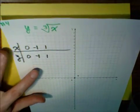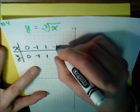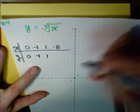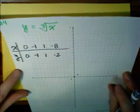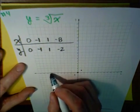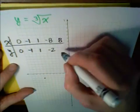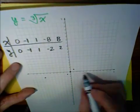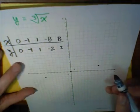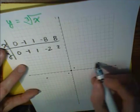But let's pick a number that has a cube root. Say negative 8. The cube root of negative 8 is negative 2. So we're going to go to negative 8, negative 2. Likewise, the cube root of 8 is 2. So 8, 2, and I hope you see this is going to have this similar jig.